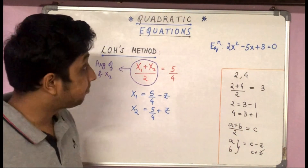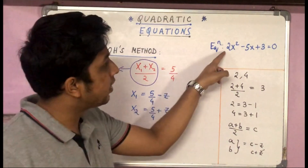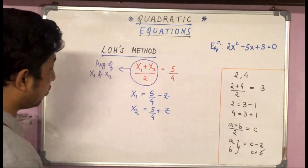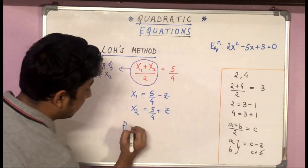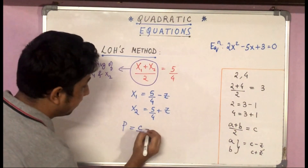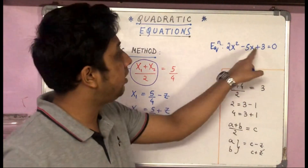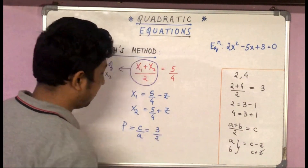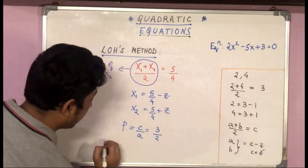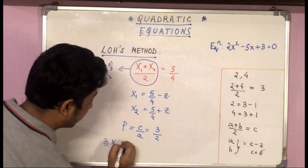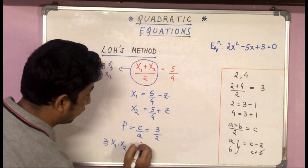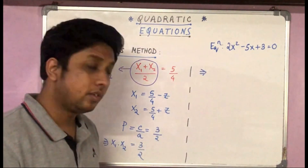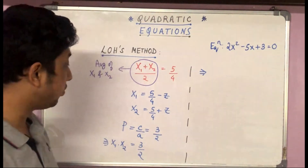The next step: the product of the roots is c/a = 3/2. So x₁ × x₂ = 3/2.